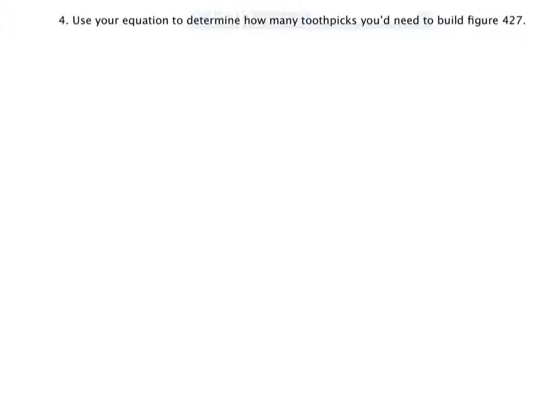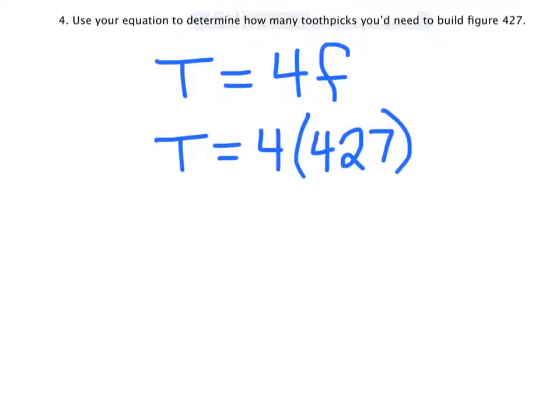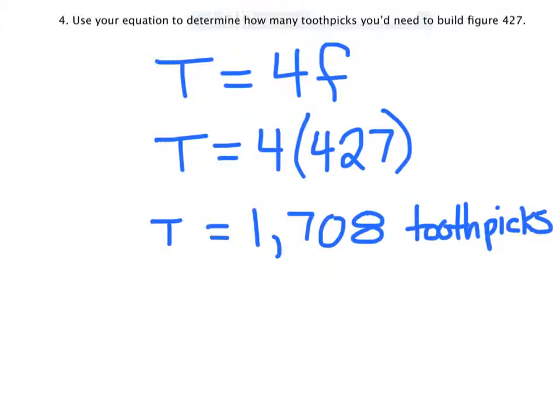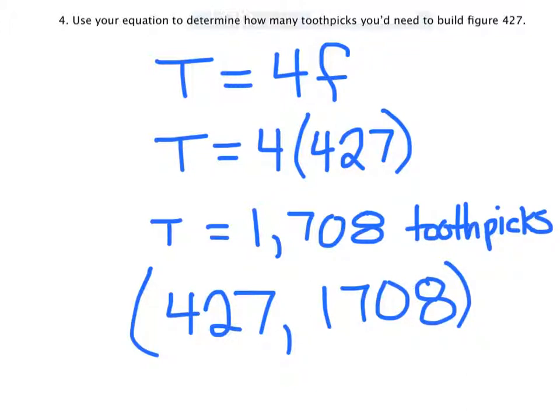So our final question is asking us to find how many toothpicks we'd need to build figure 427. We have our equation again with figure number four hundred and twenty seven, we end up with a total of one thousand seven hundred and eight toothpicks. That means ultimately if we were to continue our table on, we'd eventually see figure number four hundred and twenty seven and we would have one thousand seven hundred and eight toothpicks in total.